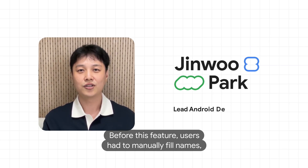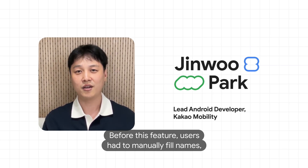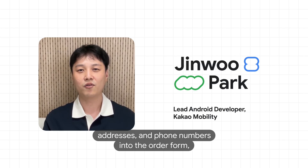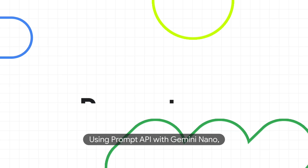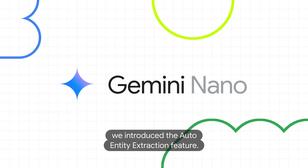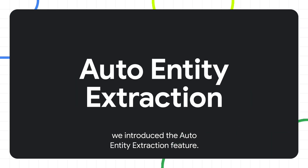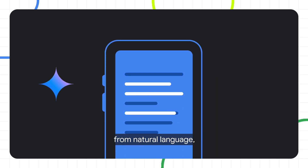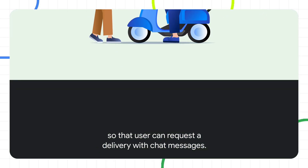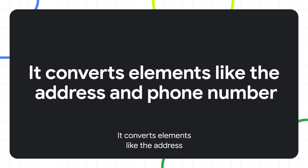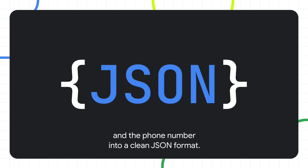Before this feature, users had to manually fill in names, addresses, and phone numbers into a form — a slow process. Using the Prompt API with Gemini Nano, they introduced the auto entity extraction feature. It automatically recognizes necessary information from natural language, so that users can request a delivery with chat messages. It converts elements like the address and phone number into a clean JSON format.